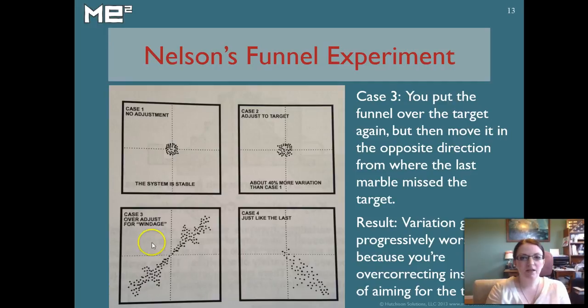In Case 3, the idea was that he saw people put the funnel over the target again. So they would accidentally hit right here and they'd re-aim for that target right in the middle. But then they'd have a second thought, they'd second guess themselves and they'd do exactly what number 2 did. They would overcorrect and move the funnel over here. And what happens is the results keep getting further and further apart and more and more unpredictable. In these cases, variation gets progressively worse and unpredictable because you're overcorrecting instead of aiming for the target.